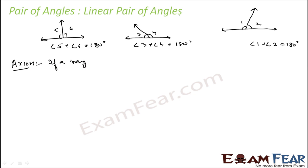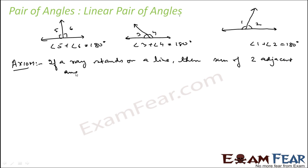The axiom states: if a ray stands on a line, then the sum of the two adjacent angles so formed is 180 degrees. This is an axiom because there is no formal proof for this — it is considered to be true, and using construction we can verify it. This reiterates the definition of a linear pair: adjacent angles whose sum is 180 degrees.